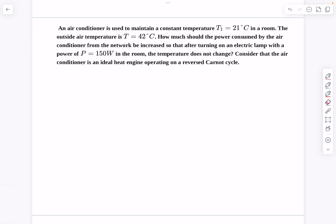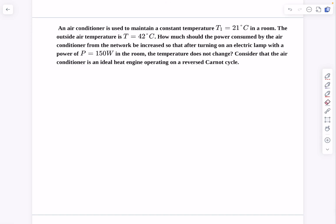In this problem, we have an air conditioner that is used to maintain a constant temperature of 21 degrees Celsius in a room and the outside air temperature is 42 degrees Celsius.